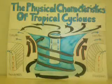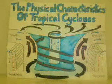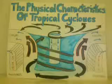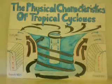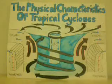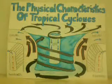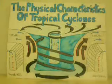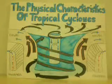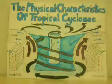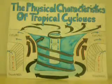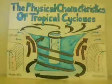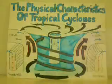As air rises, it cools, becomes saturated, and condenses. Water vapor condenses into liquid droplets, and you get the formation of thunderclouds. Condensation releases heat stored in water vapor. This latent heat warms the atmosphere, and air becomes lighter, causing strong updrafts.